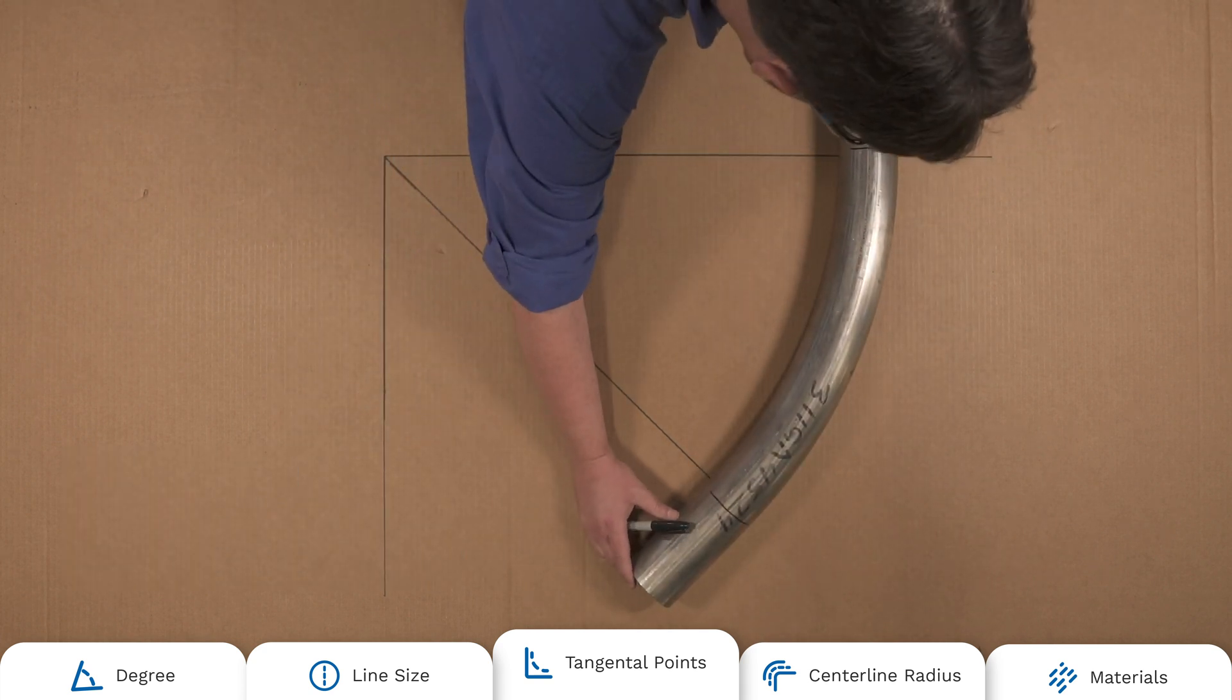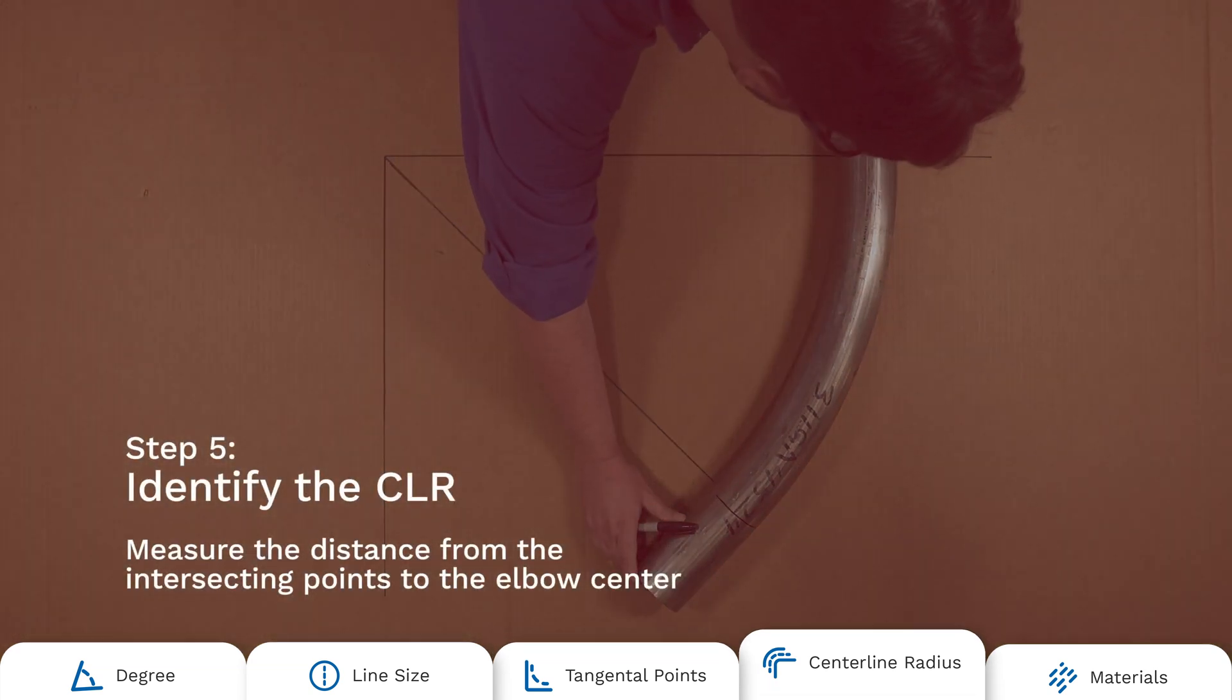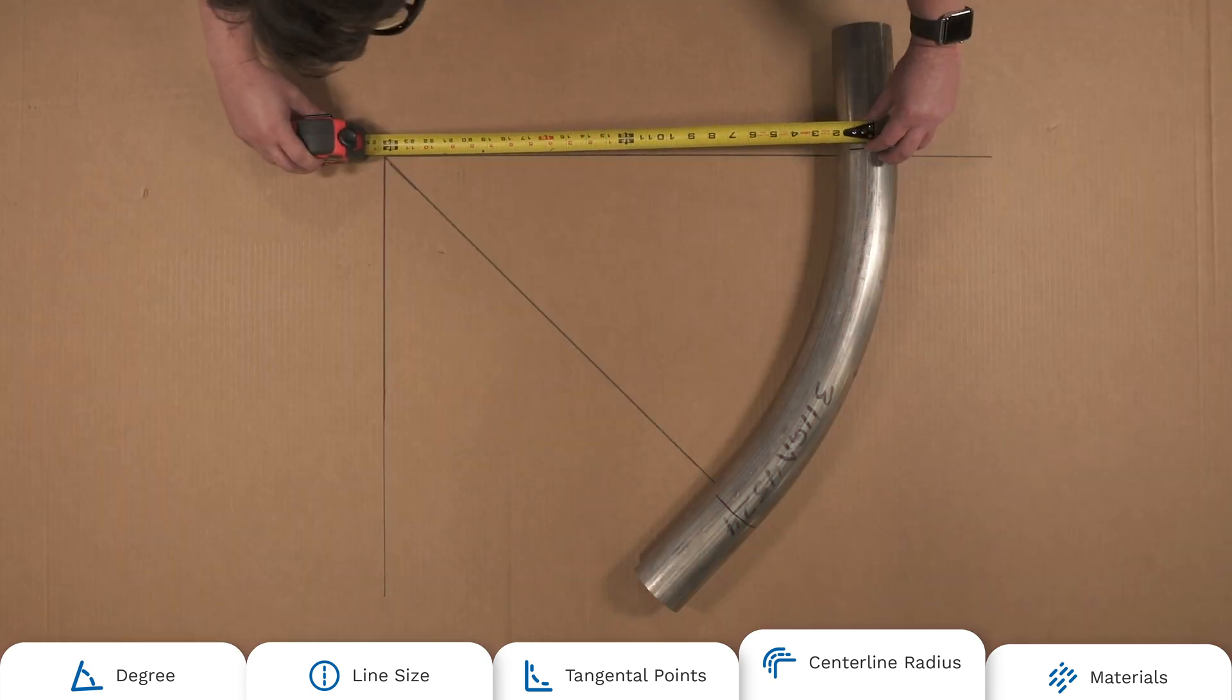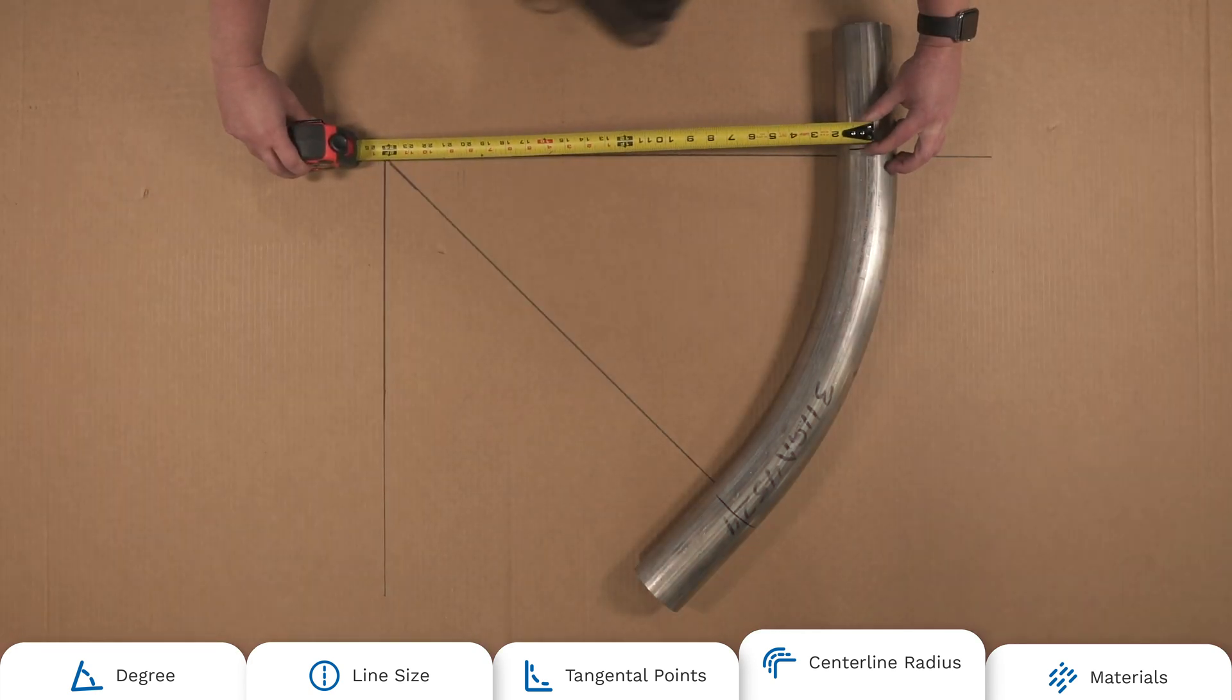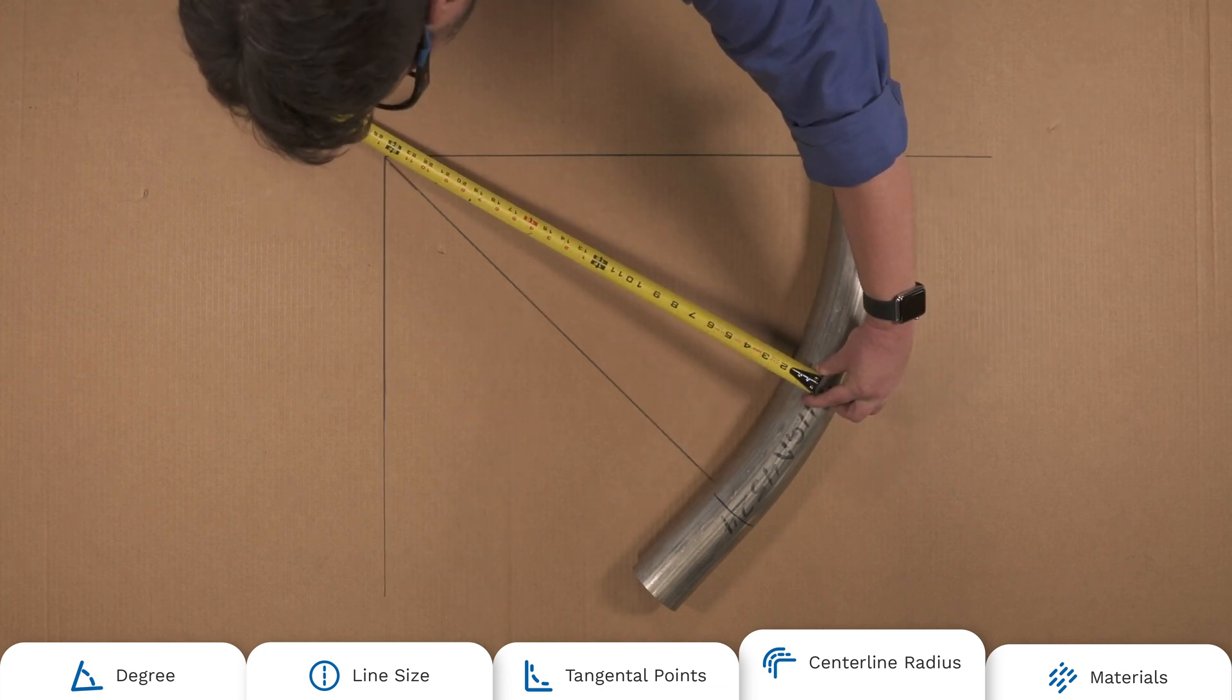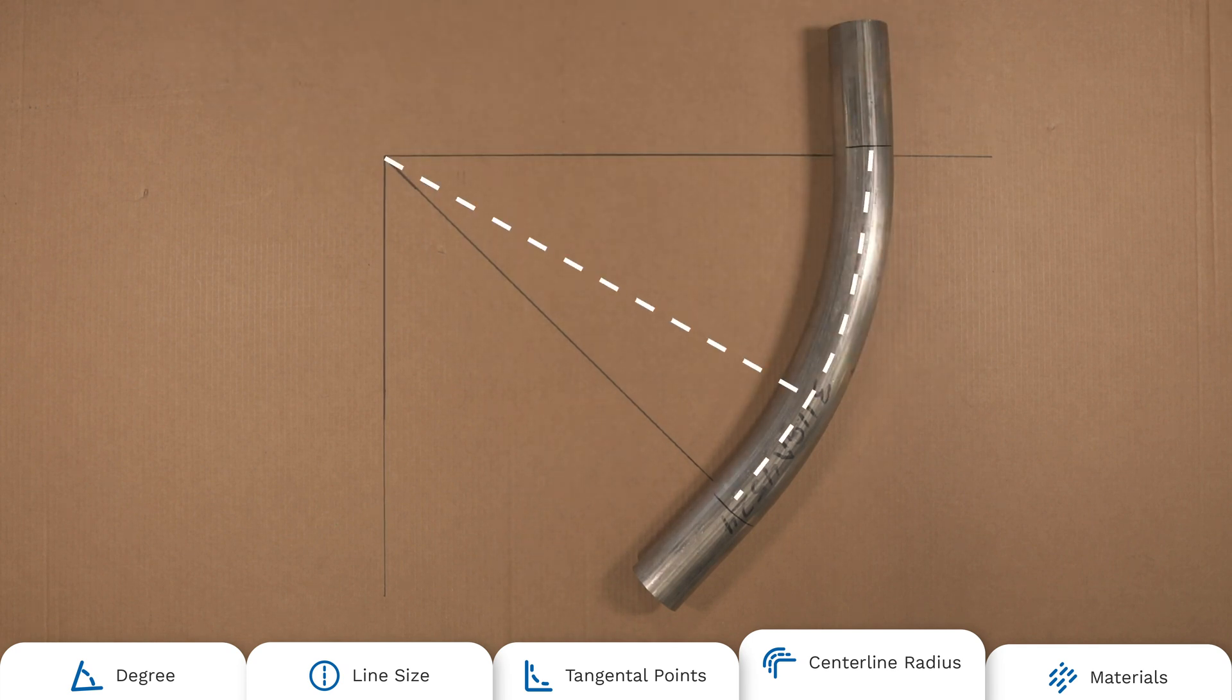Now you have your elbow angle, diameter, gauge and tangent. Next, you need the centerline radius or CLR. Measure from the center of the elbow at the center point of the bend to where the two lines intersect. In fact, taking this measurement from anywhere on the elbow will give you the centerline radius. The distance from the intersecting points to the elbow center is your centerline radius. It will also tell you what your tangent length is.